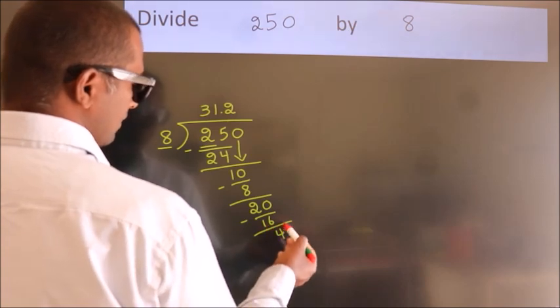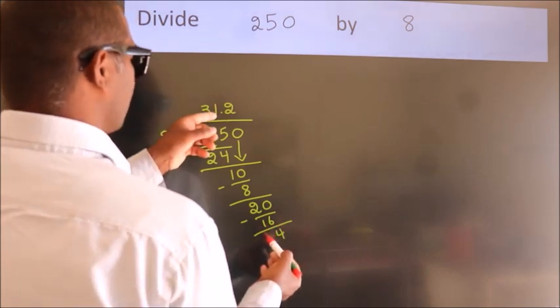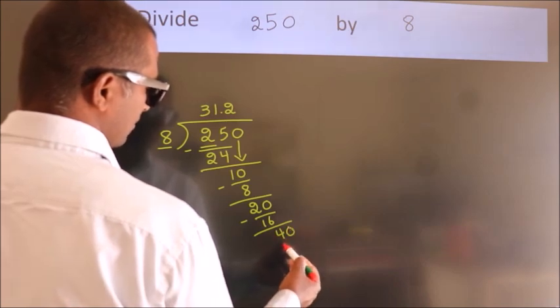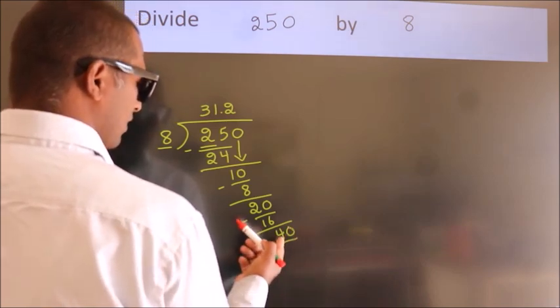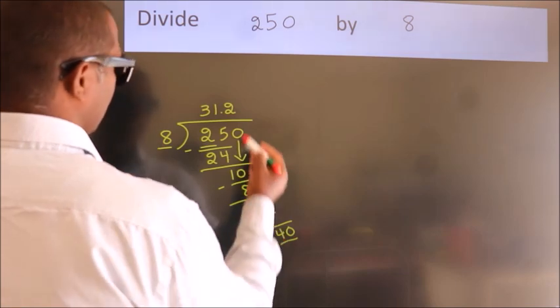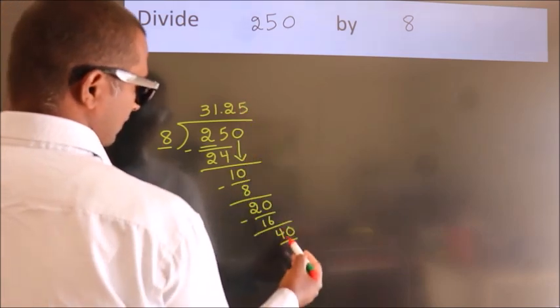After this, we already have the decimal. So directly take 0. So 40. When do we get 40 in the 8 table? 8 fives, 40.